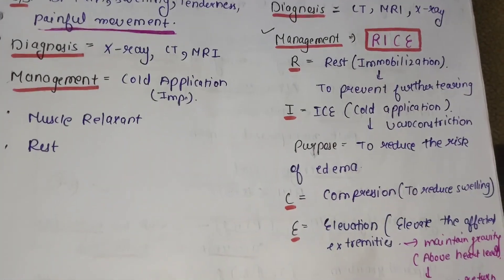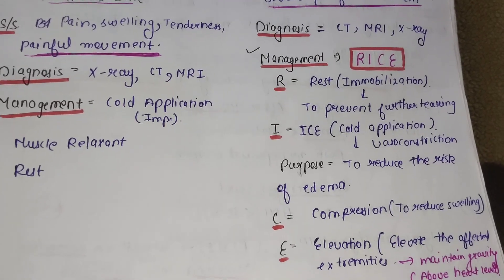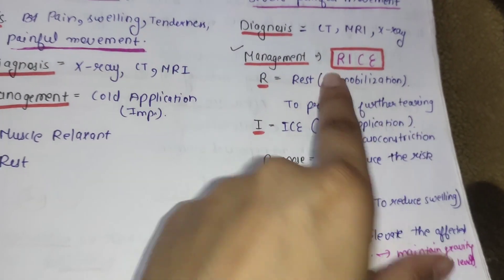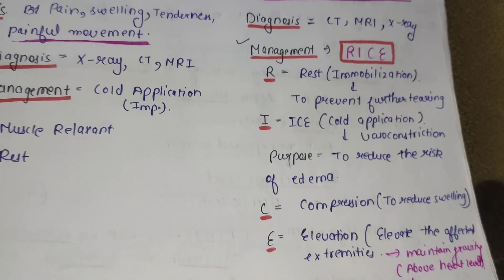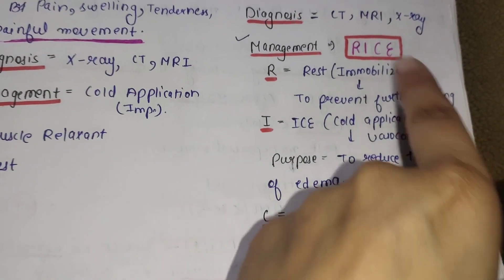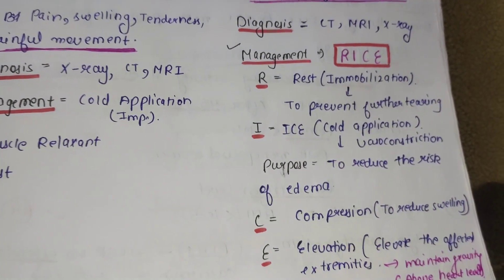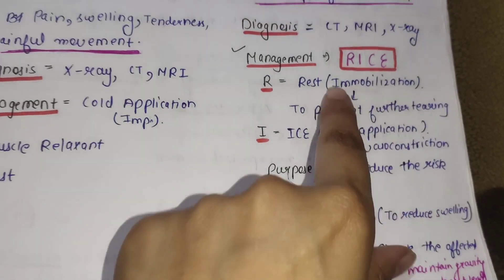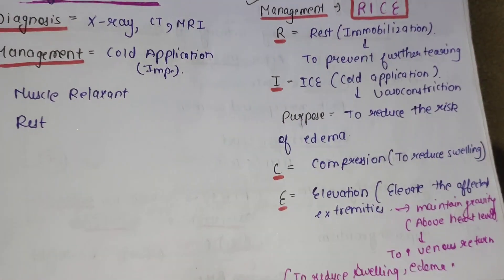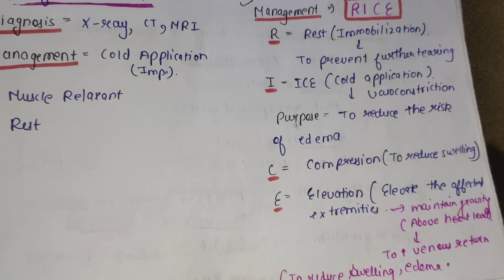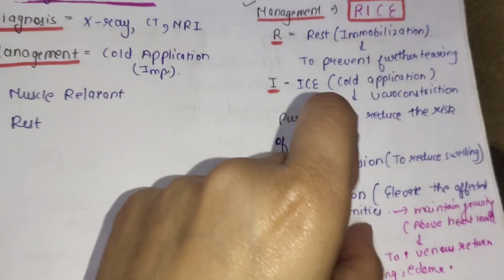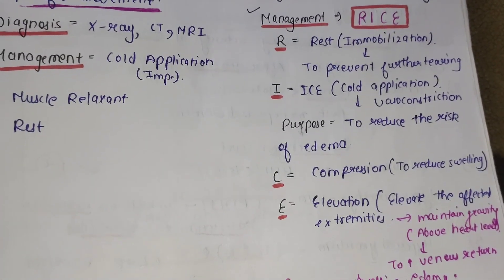Management के लिए sprain में RICE technique का use किया जाता है. R से Rest — immobilize करवाया जाता है, proper rest provide किया जाता है, movement नहीं करवाई जाती, ताकि जो further tearing का risk है वो prevent हो सके. I से Ice या cold application का use किया जाता है.